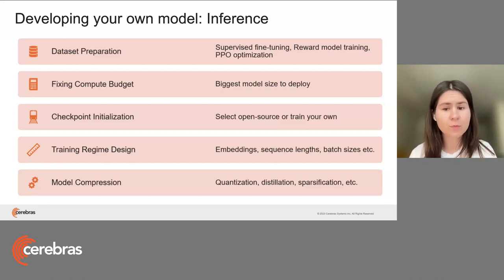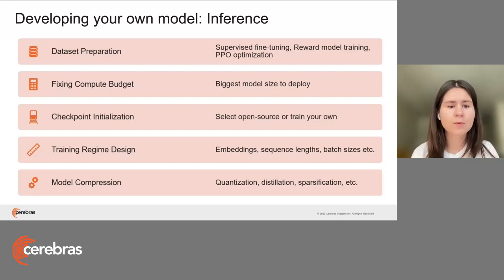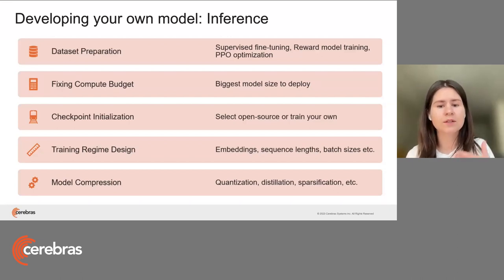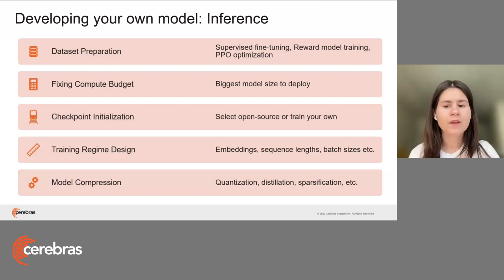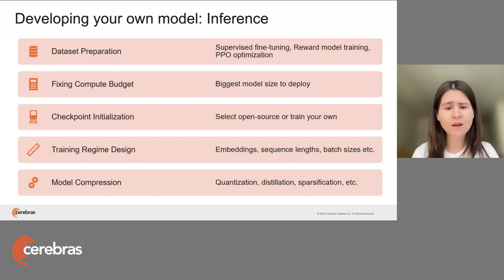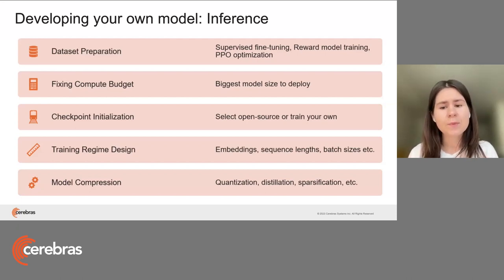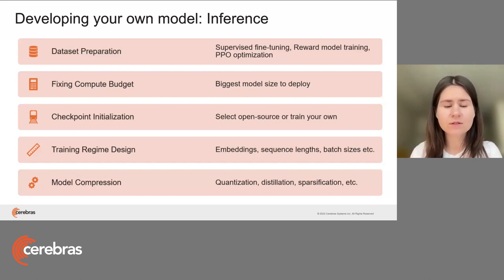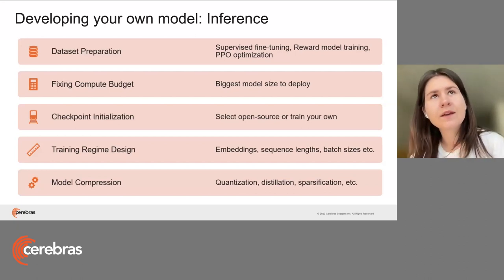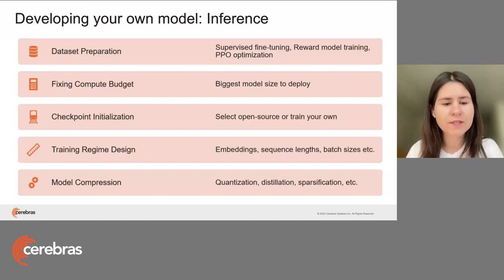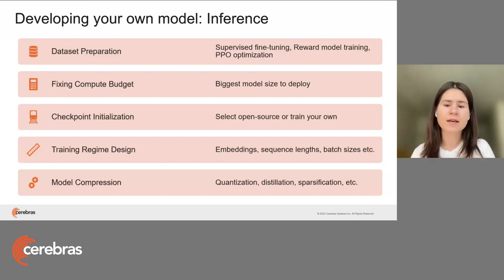Before ChatGPT, people would just create a supervised fine-tuning dataset where you have an example with a label and you learn that label. But after ChatGPT was released, people started following a different idea with a few stages. I recommend reading the InstructGPT paper because it has a lot of details on how that can be implemented.